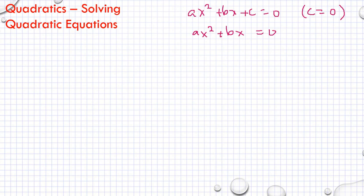We have ax squared plus bx equals 0. When you see something like this, when you cannot see a constant without x, just a constant, then what you can do here...